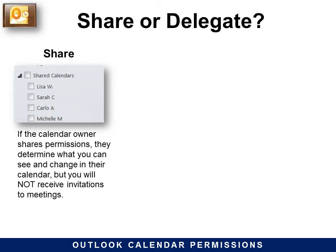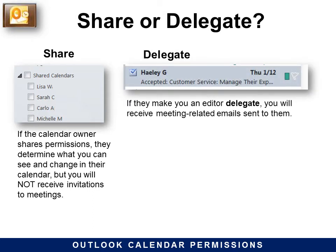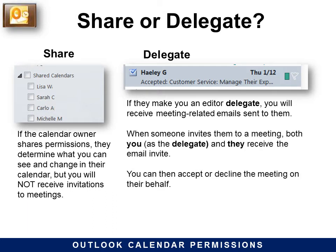Do you want to share or use the delegate option? If the calendar owner shares permissions, they determine what you can see and change in their calendar, but you will not receive invitations to meetings. If you have delegate access and they make you an editor delegate, you will receive meeting-related emails sent to them. When someone invites them to a meeting, both you as the delegate and they receive the email invite, and you can then accept or decline the meeting on their behalf.